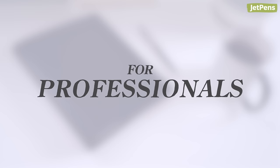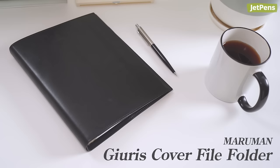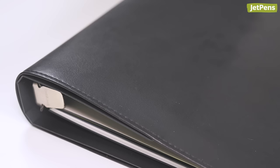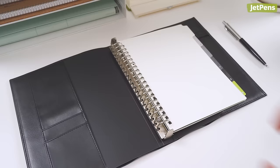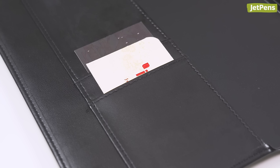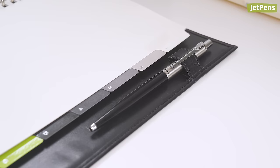For professionals, the Maruman Jewelrys is an undeniably sophisticated binder for working professionals. The exterior is made of supple faux leather and the metal rings snap open by pressing on the tabs at the top and bottom. The slots in the cover can hold business cards and pens.